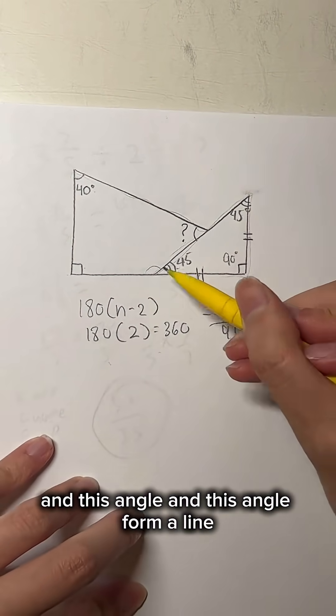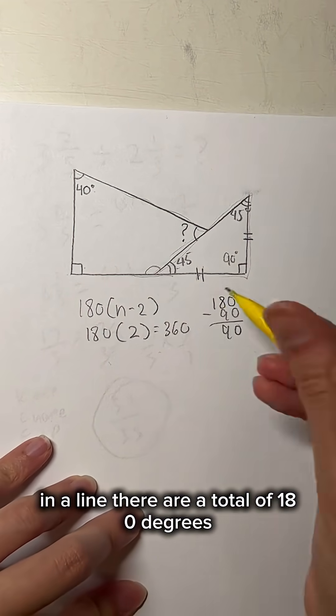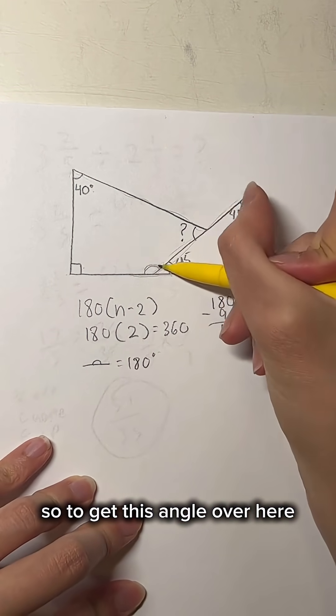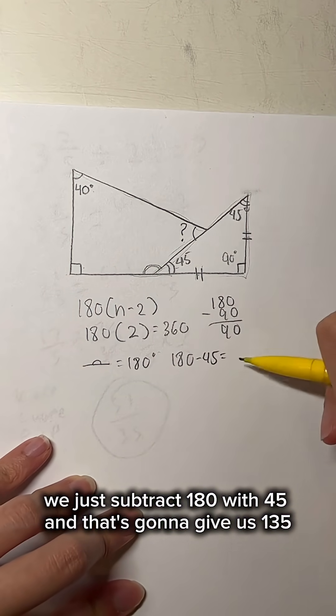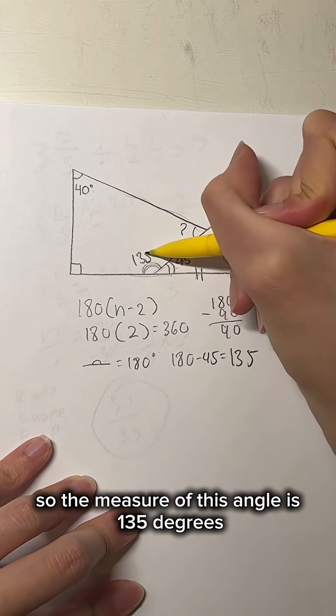And this angle and this angle form a line. In a line, there are a total of 180 degrees. So to get this angle over here, we just subtract 180 minus 45, and that's going to give us 135. So the measure of this angle is 135 degrees.